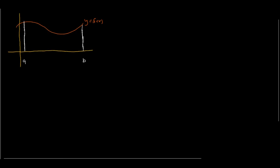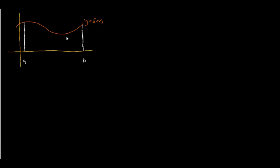So I have here a function, y equals f of x. What I want to do is to approximate the area under the curve from this interval, from a to b. The way I would do this is to approximate this area by drawing smaller rectangles of equal width. Let's designate a variable n that defines the number of rectangles with equal width.